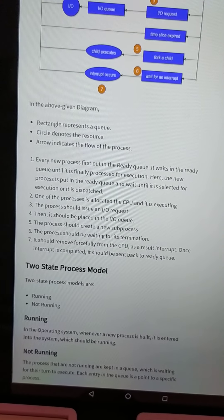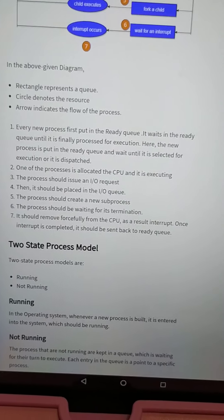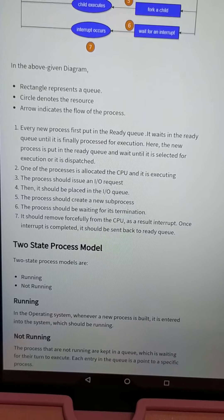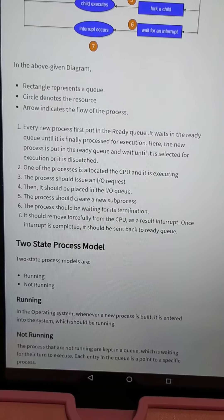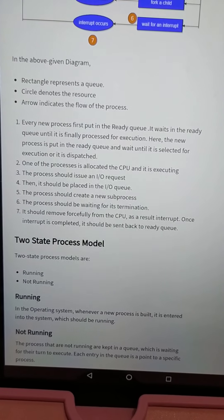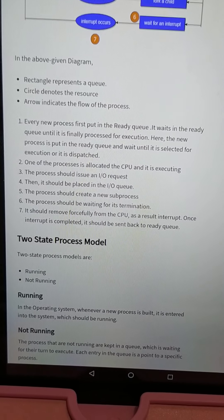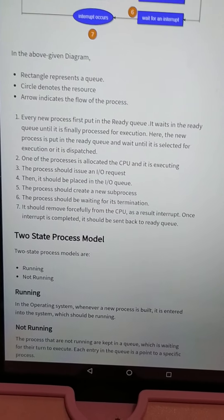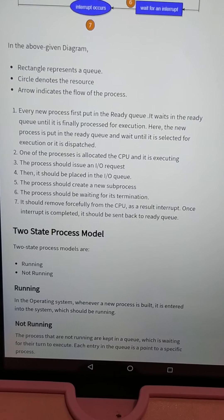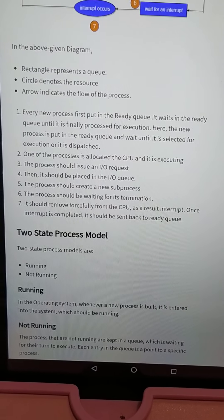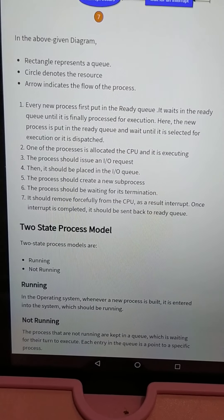Third step: the process should issue an input-output request if it needs an input device. For example, if you give a print option and the printer device is unavailable, it makes a request — printer is needed, otherwise it cannot print. A message box appears indicating printer connectivity is unavailable or the printer is not switched on.